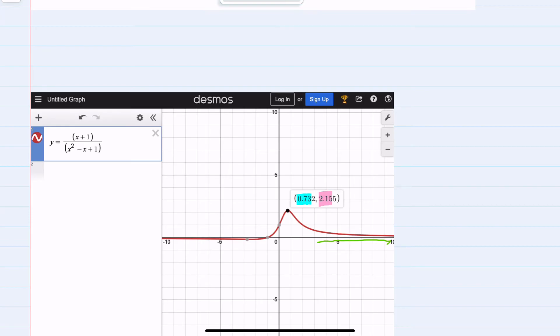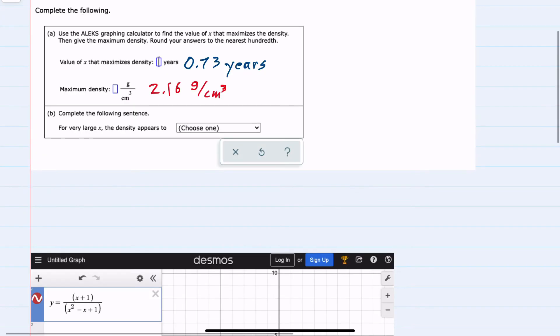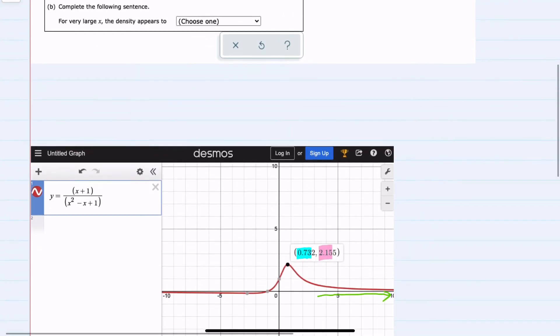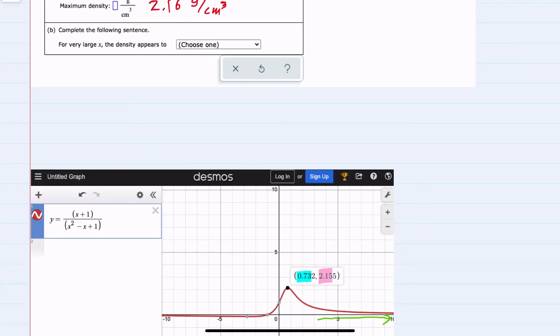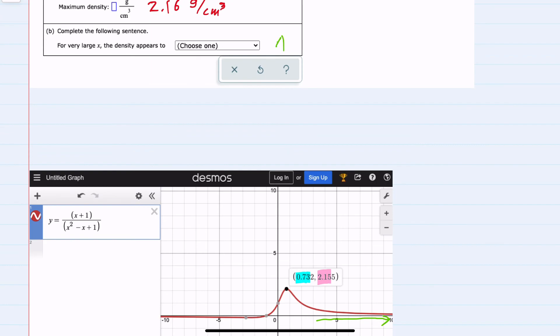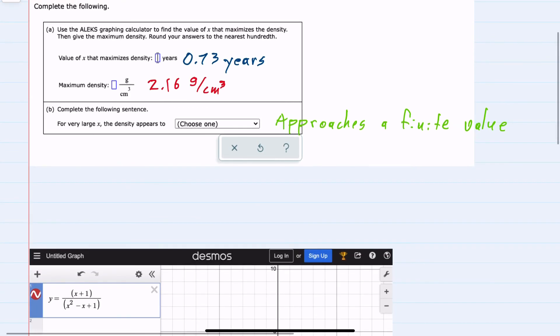Our second question asks about what happens as x is getting large. So we can see that the density, our y value, appears to be moving towards some sort of constant. It stops changing, apparently just above 0. And in our drop-down, we would say the option is that the density is approaching a finite value. So we've used the graph to answer all of the questions.